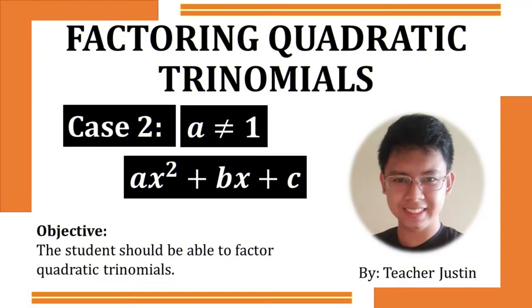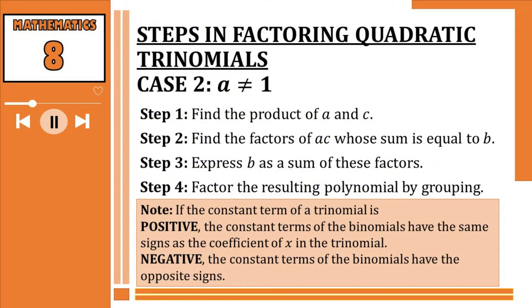Good day everyone, welcome to another Math with Teacher Justin. Today's topic is factoring quadratic trinomials where the numerical coefficient of the first term is not equal to 1. Here are the steps for Case 2: we focus on the numerical coefficient of the first term, which is a, and the constant term, which is c. We multiply them, then find factors of a·c whose sum equals b, express b as the sum of those factors, and apply factoring by grouping.